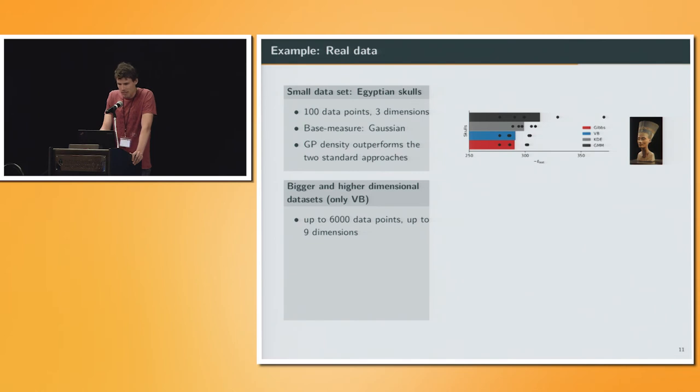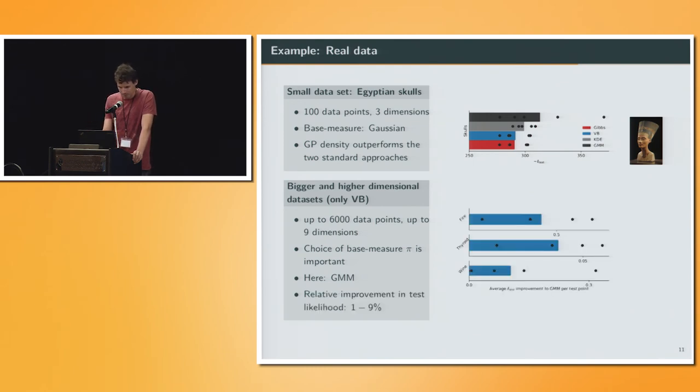For bigger and higher dimensional data sets, we can only use the variational Bayes. We have up to 6,000 data points in these data sets and up to 9 dimensions, so not super high dimensional. But still, we already noticed that the choice of base measure becomes important here. As we heard yesterday, in high dimensional spaces Gaussians do strange things. Maybe you want to choose a base measure which is already tight on your data, so where you didn't observe anything, you will also not think that there's a lot of probability mass. What we do here is we choose a Gaussian mixture model as a base measure, and then check if our algorithm, our model, can improve the test likelihood by just using the Gaussian mixture model. We see on these three data sets that we have a relative improvement on test likelihood from 1 up to 9%.